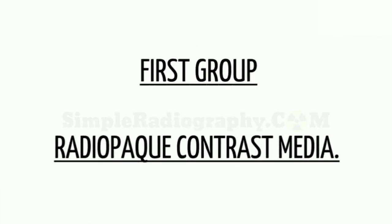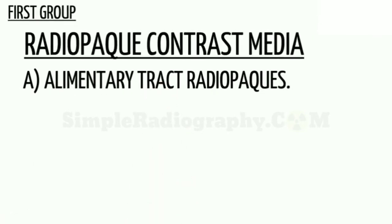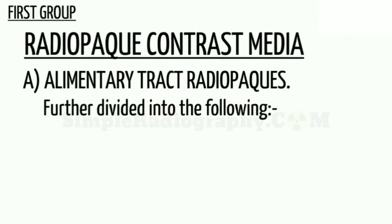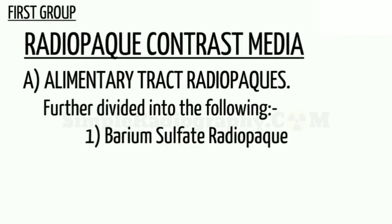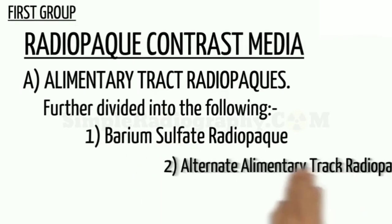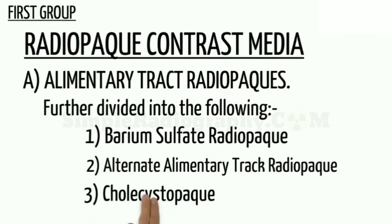Group Number 1: Radio-Opaque Contrast Media. Sub-group A: Alimentary Tract Radio-Opakes. This is further divided into Barium Sulfate Radio-Opakes, Alternate Alimentary Tract Radio-Opakes, and Collocystopakes.